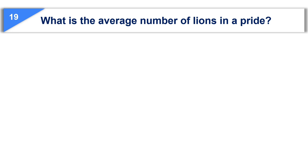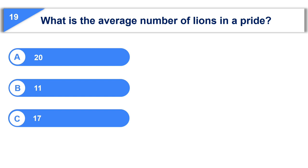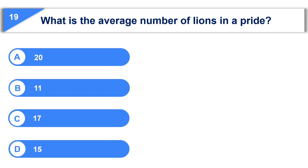The 19th question is, what is the average number of lions in a pride? Option A, 20. Option B, 11. Option C, 17. Option D, 15.